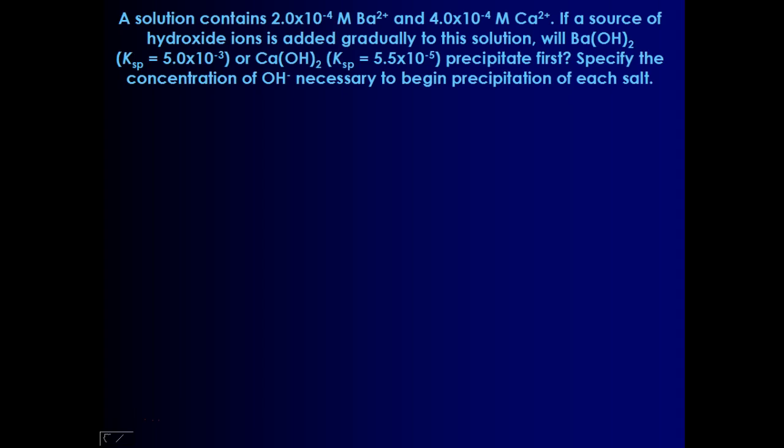I have a couple students in the room today while I'm taping this one. So we are looking at a solution that contains two metal ions, barium and calcium, and I want to know if you add hydroxide to the solution, which of those two will precipitate first? The barium hydroxide precipitate or the calcium hydroxide precipitate? And if you look at the Ksp values, you'll see that barium hydroxide has a slightly larger Ksp value compared to calcium hydroxide.